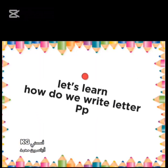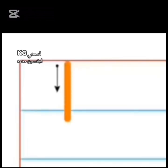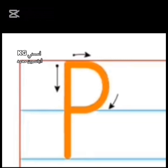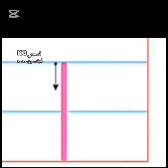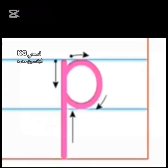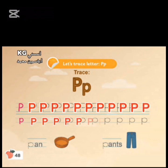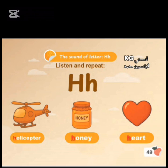Let's learn how to write letter P. Draw a straight line from up to down, then draw a semicircle. Capital P: draw a straight line from up to down, then draw a semicircle. Small p. Page 48. Trace letter P. Page 49.